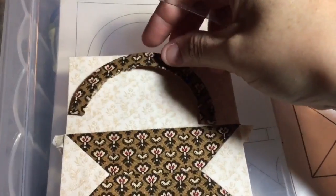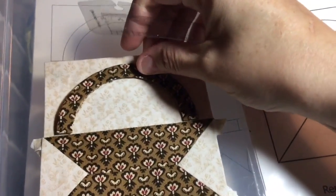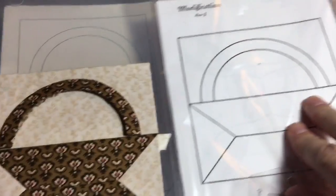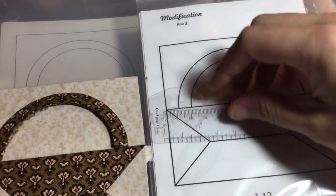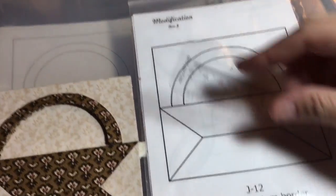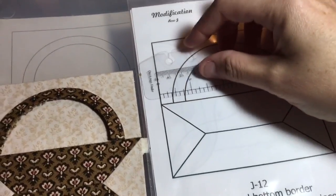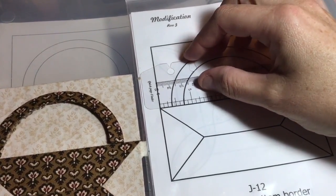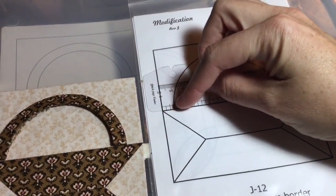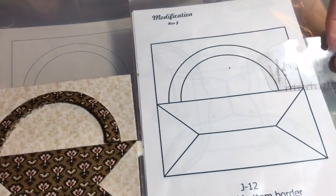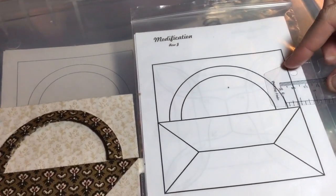So how do you determine where your handle goes? Do you eyeball it or how do you do this? What I've got is my modified diagram out of my booklet and a ruler. I'm just going to measure—you've got three eighths of an inch on this side from the edge and three eighths of an inch on this side from the edge.